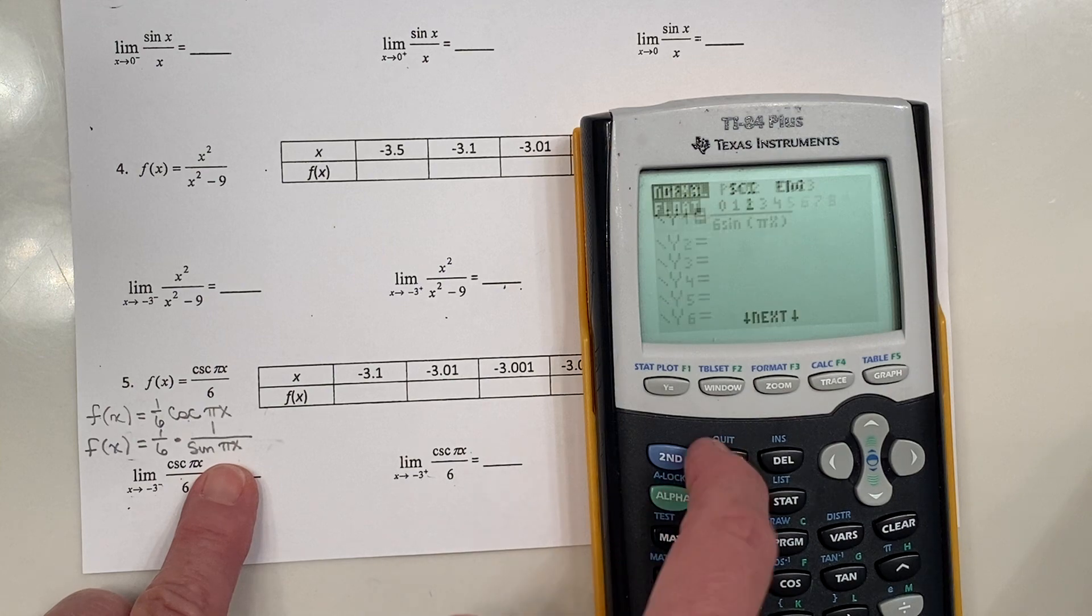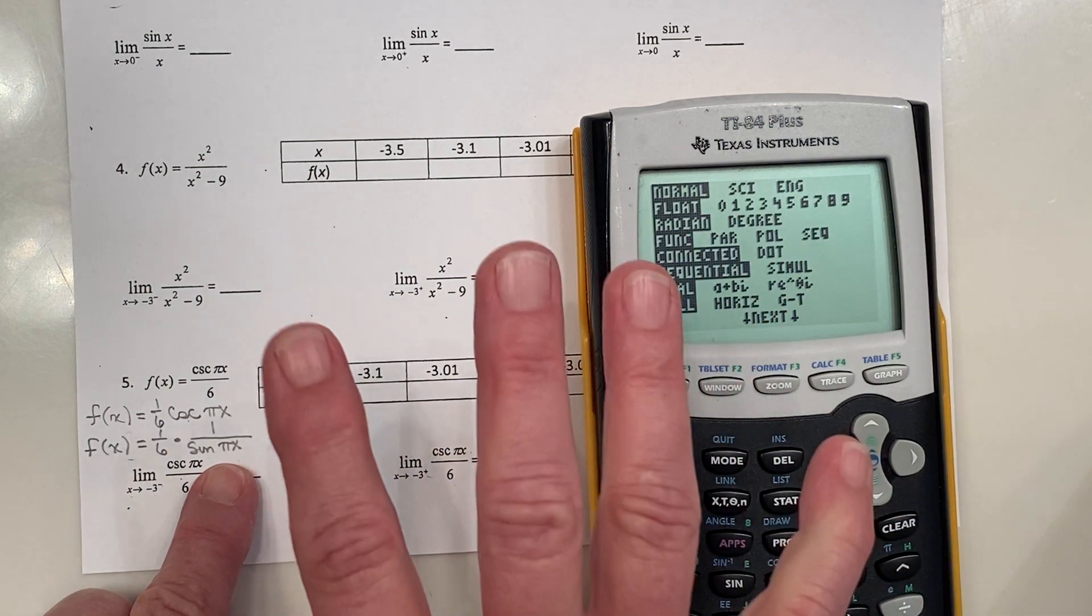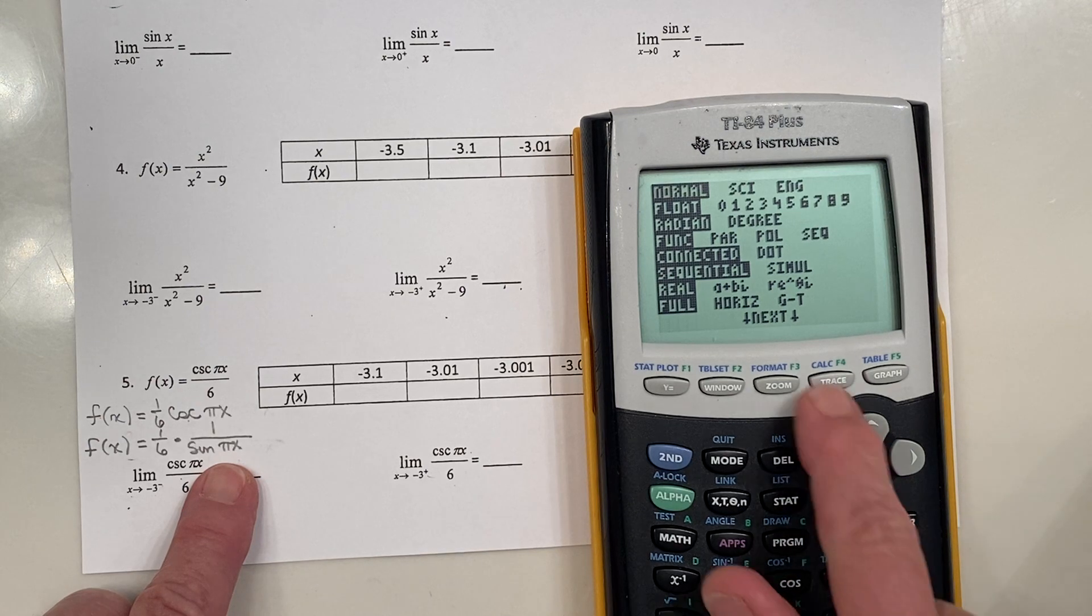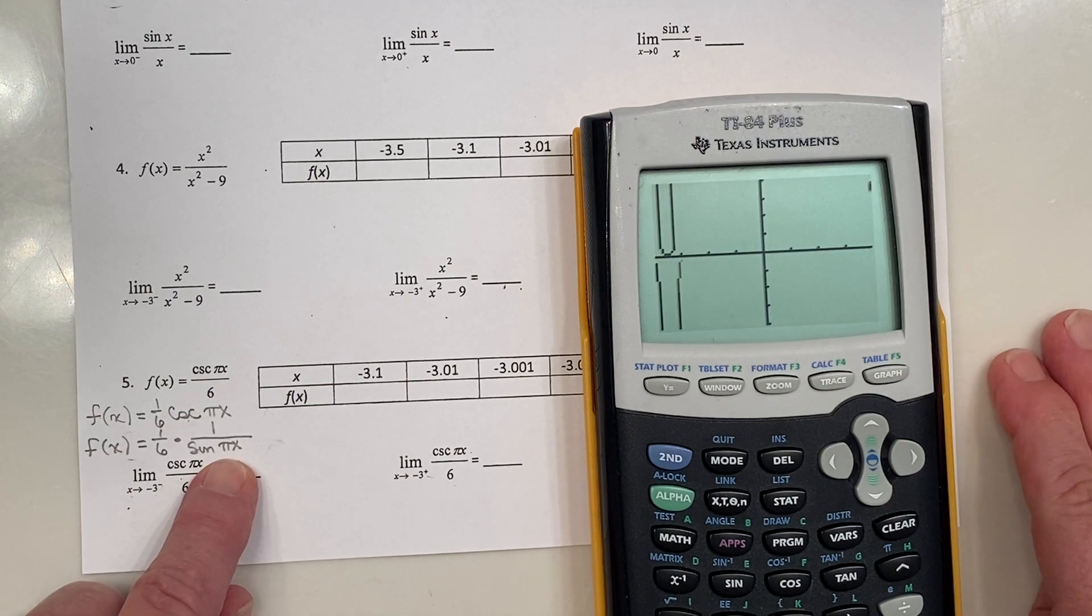I'm going to go to my mode. I want to make sure that I'm in a radian mode, not degree. I want to make sure that's all good, and then I'm actually going to go to zoom, and I'm going to go down to the trig window, not zoom six. I'm going to go to zoom seven. That trig window is kind of nice. If I like it, I'll keep it. If not, I'm going to adjust it.